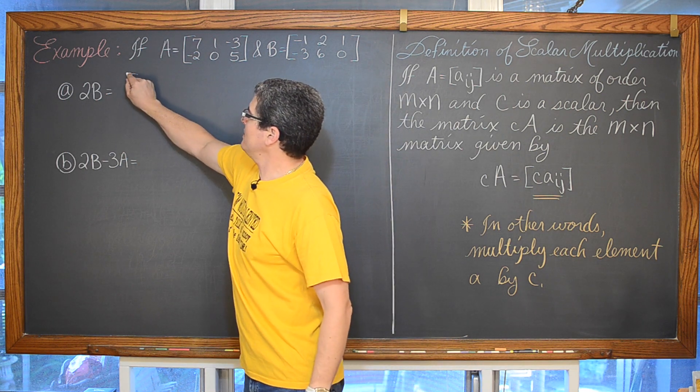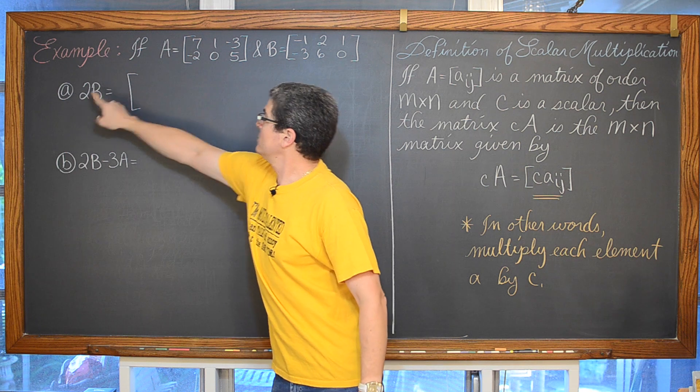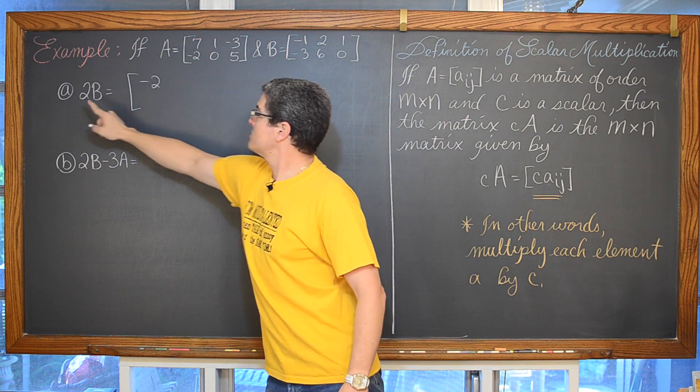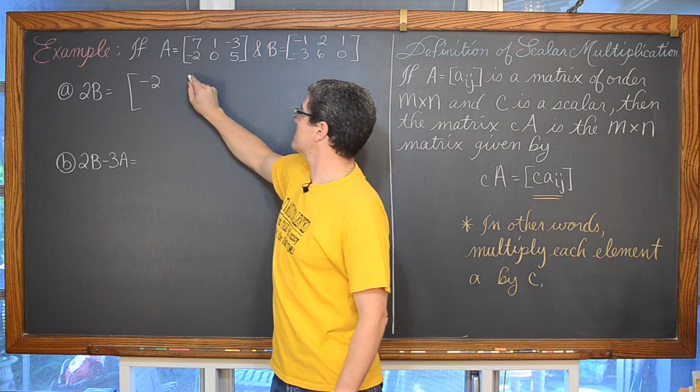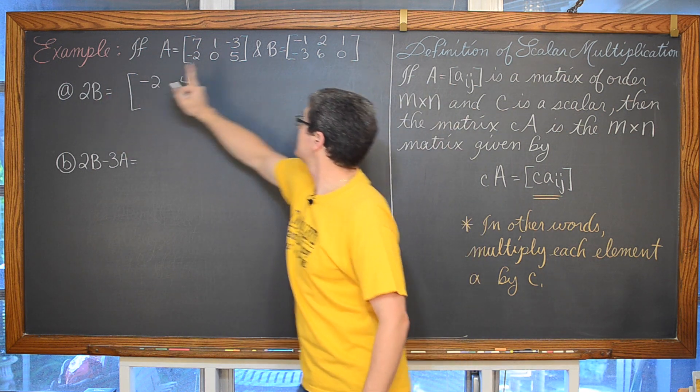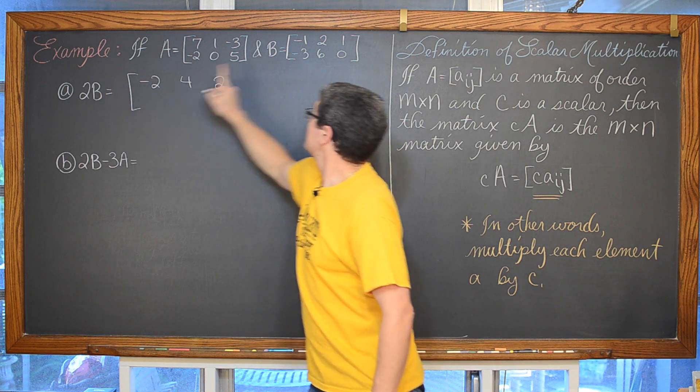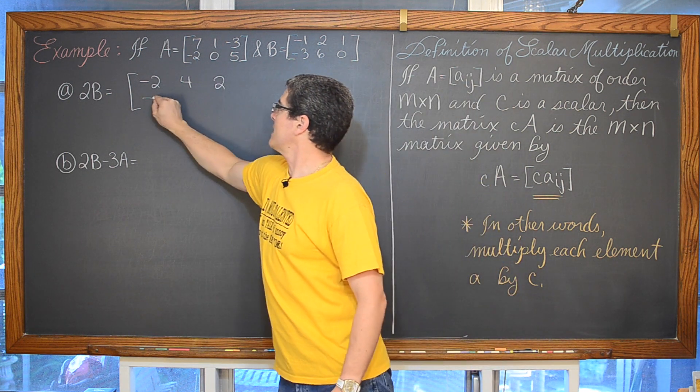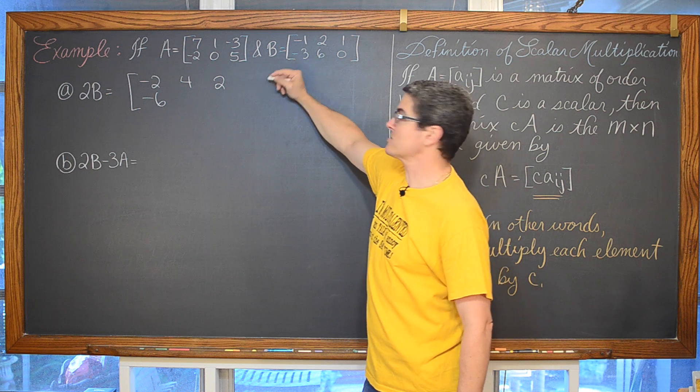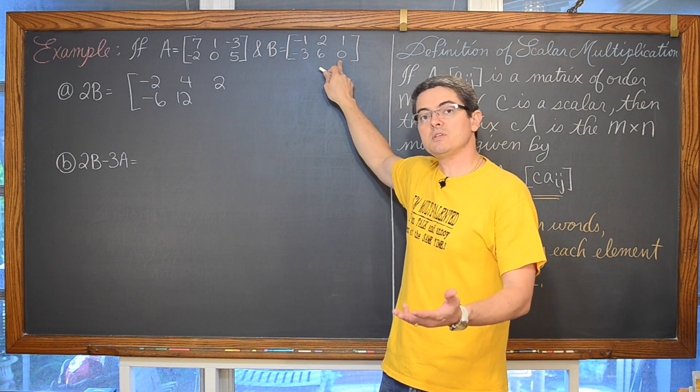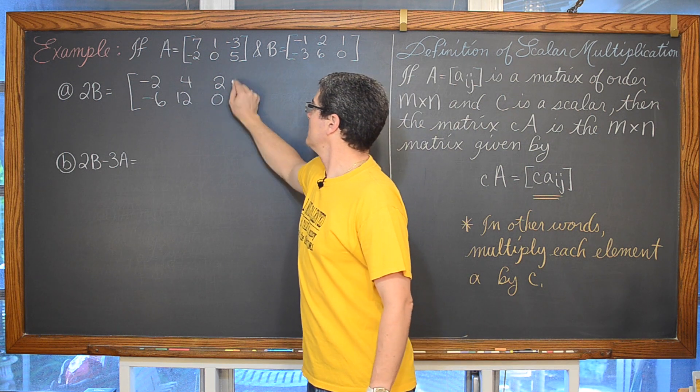So 2B is going to be equal to, well 2 times negative 1 is negative 2. 2 times positive 2 is going to be positive 4. We have 2 times positive 1 which is 2. 2 times negative 3 which is negative 6. 2 times 6 which is positive 12. And then finally 2 times 0 is going to be equal to 0.